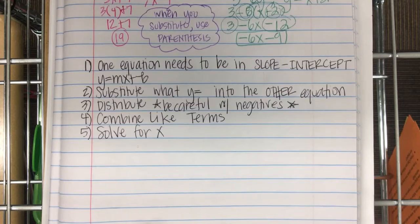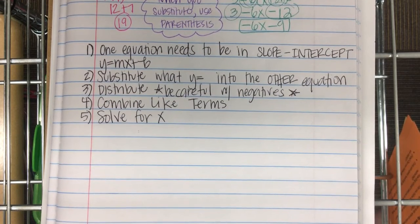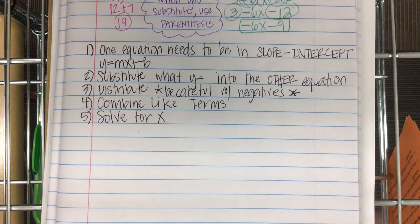Solve for x. So one equation needs to be in slope-intercept form, meaning y equals mx plus b. After it's in slope-intercept form, you substitute whatever y equals into the other equation. Then you're going to distribute. Be careful with the negatives. You're going to combine like terms, then you're going to solve for x.